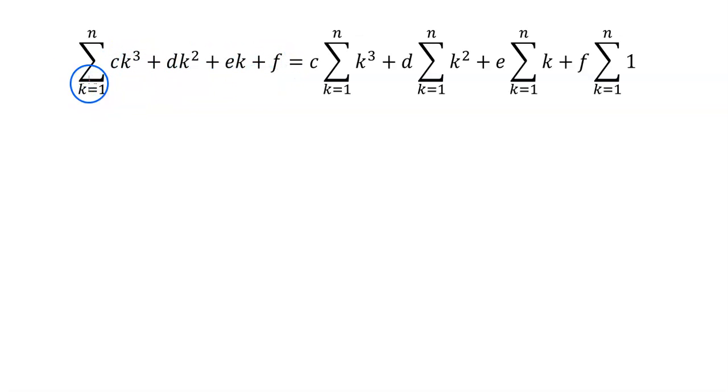And we keep adding them together until we get up to n. So c, d, e, and f are just constant numbers. So it would look like this.